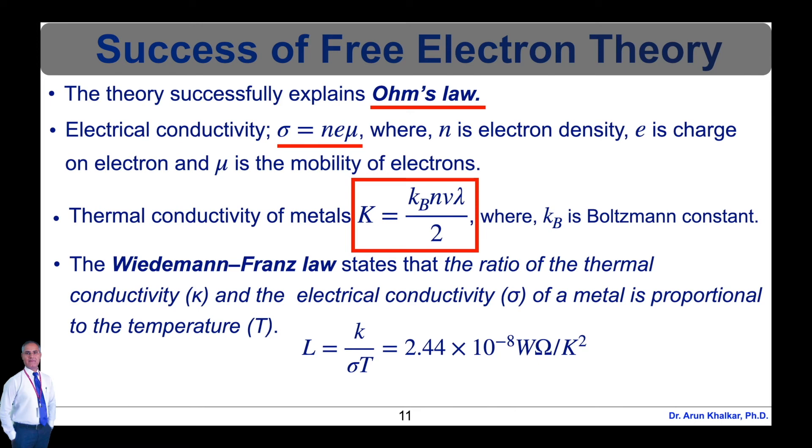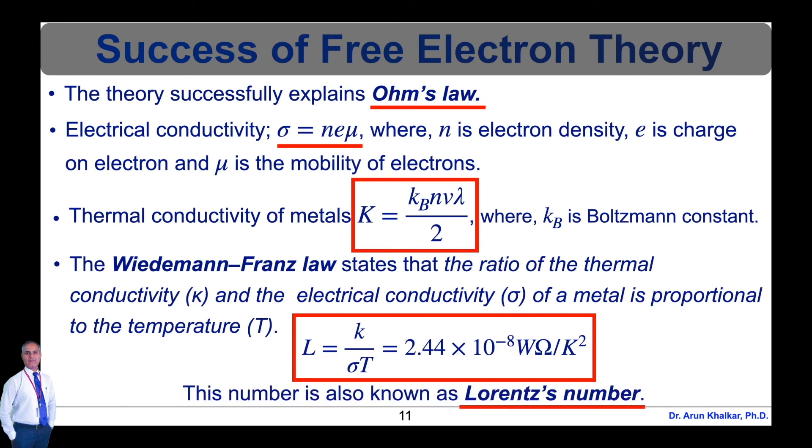The free electron theory also explains the relation between electrical and thermal conductivity which is called as Wiedemann-Franz law. The Wiedemann-Franz law states that the ratio of the thermal conductivity and the electrical conductivity of metal is proportional to the temperature. It can be shown that L equals K upon sigma T, where K is Boltzmann constant, sigma is conductivity, and T is temperature, equals 2.44 times 10 raised to minus 8 Watt Ohm per Kelvin square. This number is called as Lorentz number.